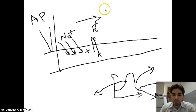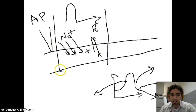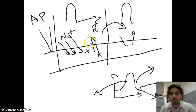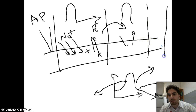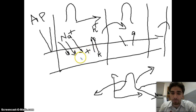So: Na+ rushing in causes depolarization, K+ rushing out causes repolarization, then back to normal. The action potential created at one point on the axon doesn't help if it doesn't move. The flipping of potential in one region of the axon affects the next region — Na+ rushes in and K+ rushes out there too, creating another action potential. That action potential affects the next region, and so on. The action potential moves along the neuron until it reaches its destination — a muscle if it's a motor neuron, or the CNS if it's a sensory neuron.